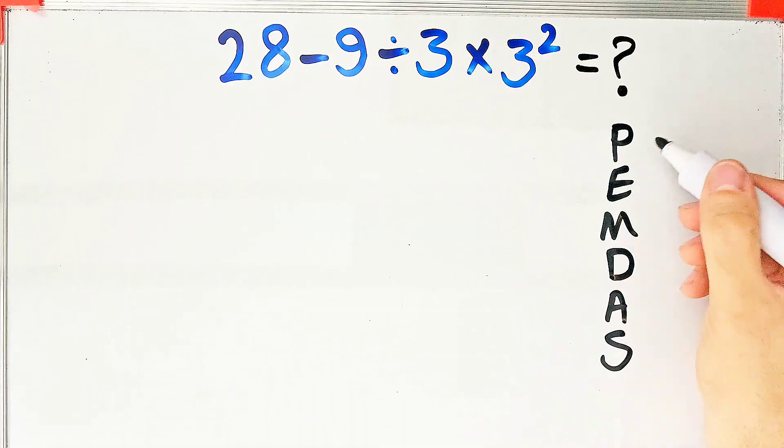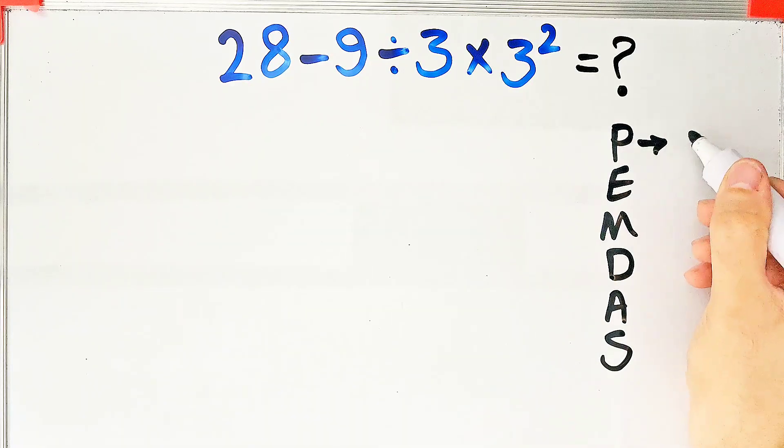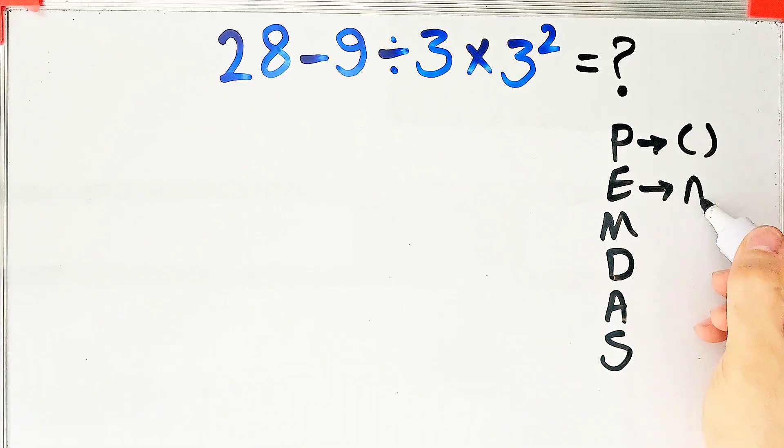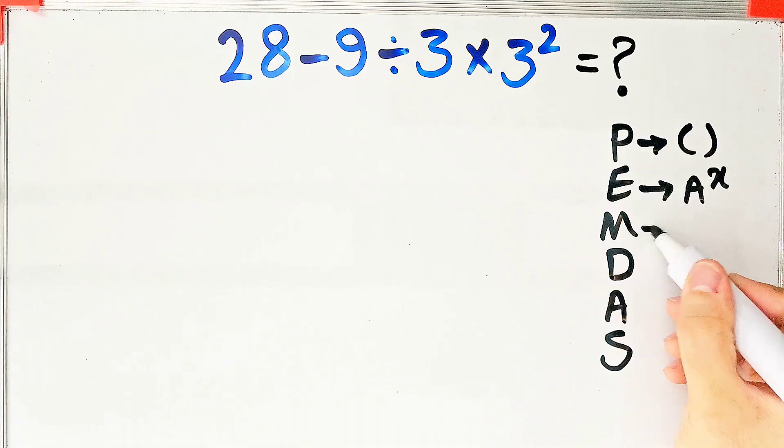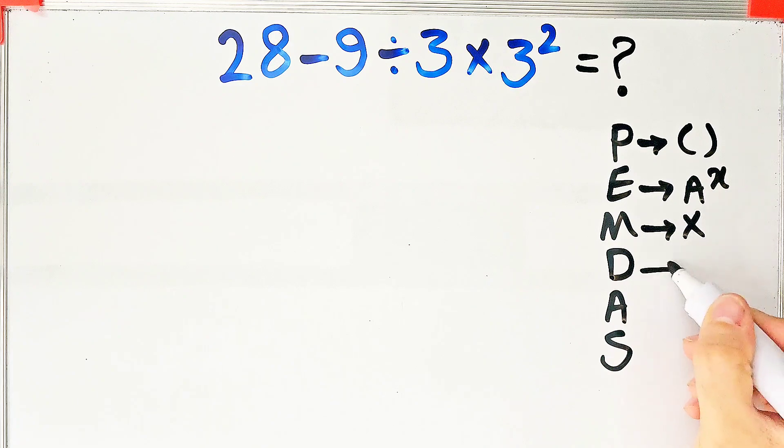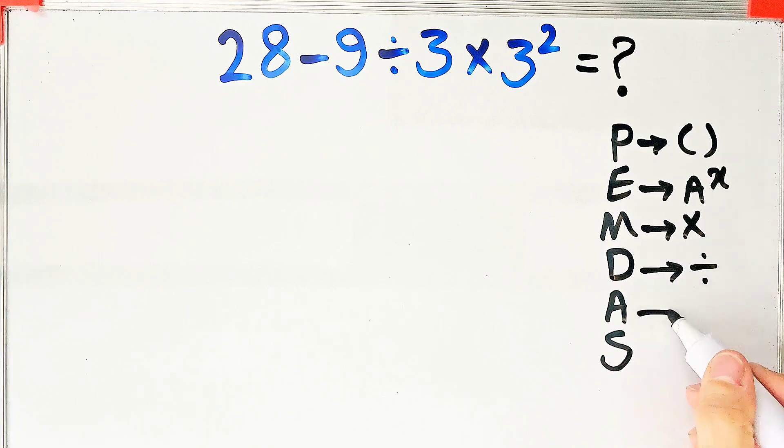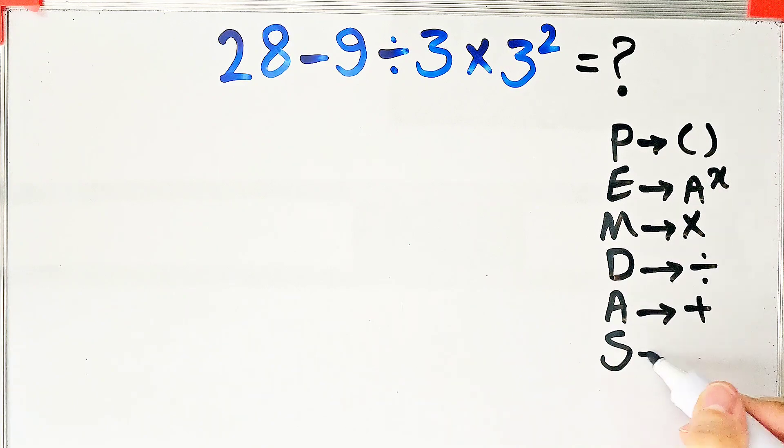In this rule, P stands for parentheses, E stands for exponent, M stands for multiplication, D stands for division, A stands for addition, and S stands for subtraction.